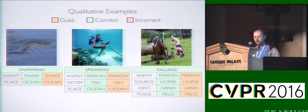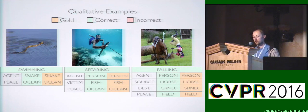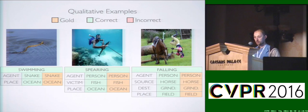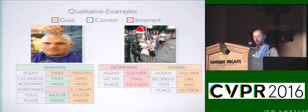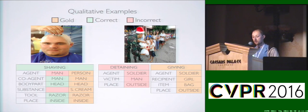This is a pretty effective method. Despite breaking down situations into triplets, it can predict entire structures correctly. For example, for the image on the left, we can say that the person is falling from the horse onto the ground and ending up on the field, or that a person is spearing a fish in the ocean. As structures grow larger, more mistakes are made — in a shaving situation, for example, we miss the substance: we don't say that shaving cream is participating, but it is annotated. For verbs like giving, which cover many nouns, the model often behaves poorly.